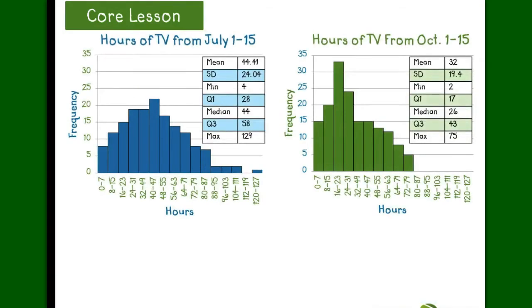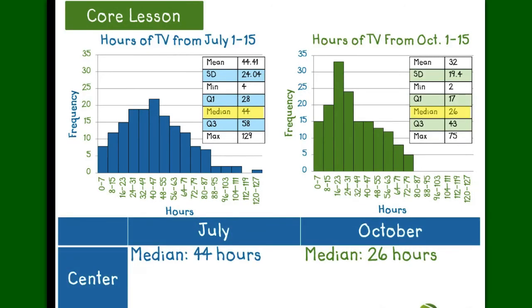Since both graphs are skewed to the right, the best measure of center is the median. Now, the center in October is lower than July by 18 hours.